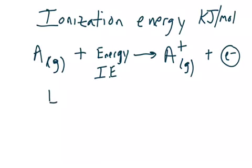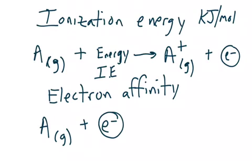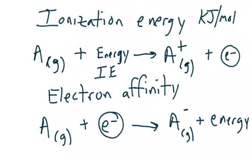In electron affinity, you also have a neutral atom. However, this time the atom is going to gain an electron — the electron is on the reactant side, as opposed to the product side with ionization energy. When that atom gains an electron, it becomes an anion, negatively charged, and there is some energy released. That energy released is called electron affinity, and just like ionization energy, it is also measured in kilojoules per mole. Notice how in electron affinity, energy is on the product side, whereas in ionization energy, the energy is on the reactant side.